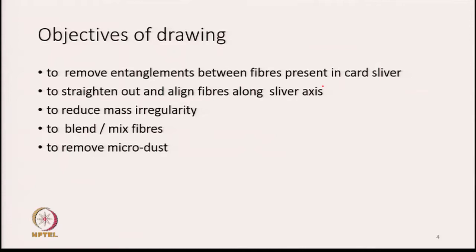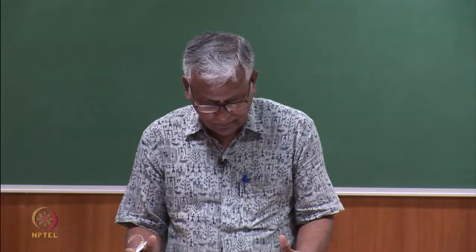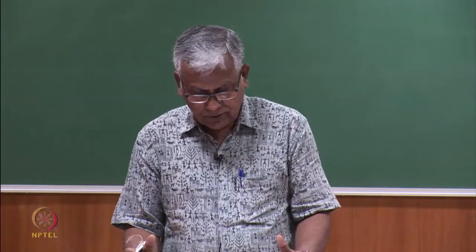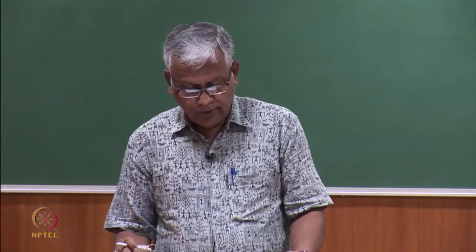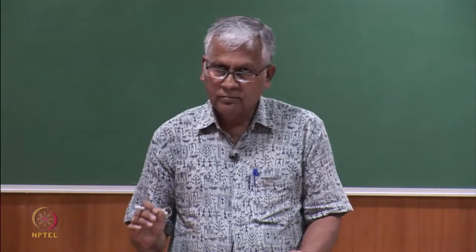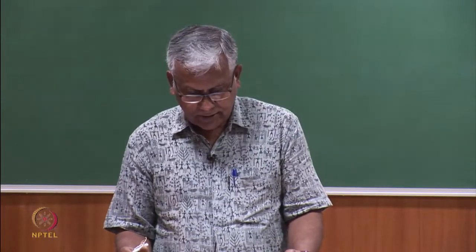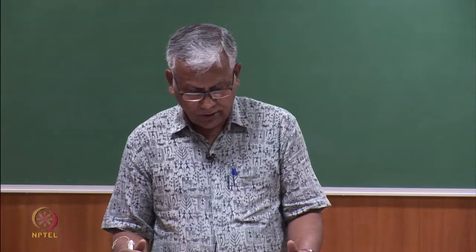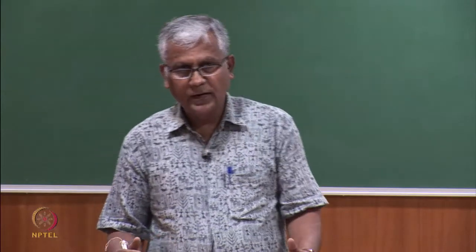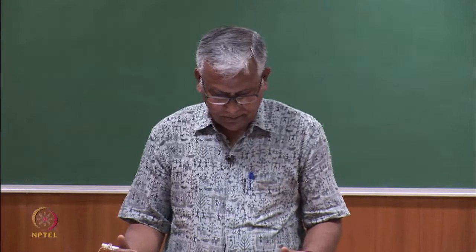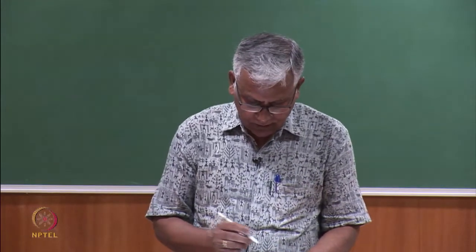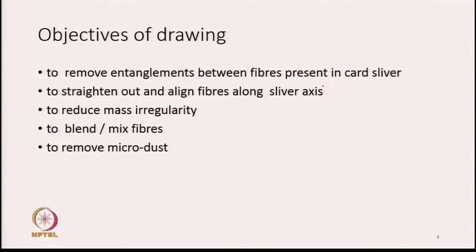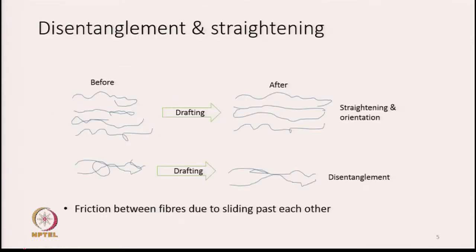Another objective is to reduce mass irregularity. The next one is to blend or mix fibers. And the last one is to remove micro dust when processing cotton fiber — for synthetic fibers, micro dust does not exist. So these are the objectives of drawing: removal of entanglement, straightening and orienting fibers along the sliver axis, reducing mass irregularity, blending or mixing fibers, and removing micro dust.